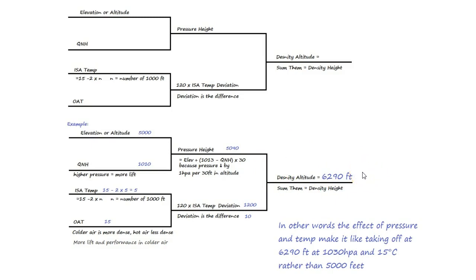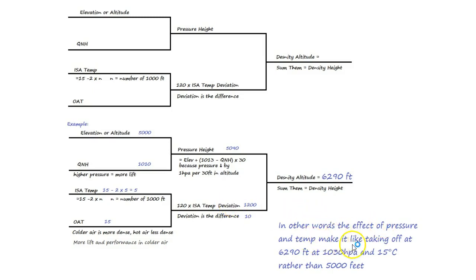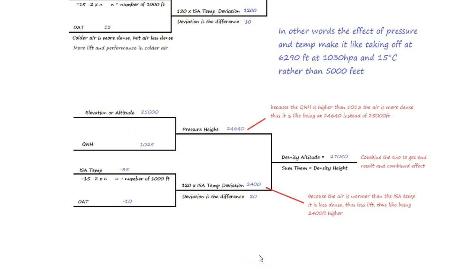Then what we do is: what was our difference in performance due to pressure? What is our difference due to temp? Let's add the two together and see what the total difference in performance is - and let's call it density altitude. That's all it is. If you remember it as a three-step dance it's much easier. Step one: find your pressure altitude using this formula. Step two: find your deviation by comparing the standard temperature to today's temperature, and once you have the deviation times it by 120. Step three: add the two together. The effective pressure and temp makes it like taking off at 6,290 feet compared to the 5,000 feet we're actually at.